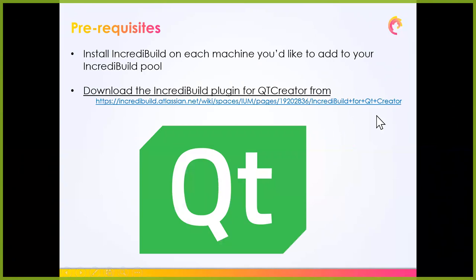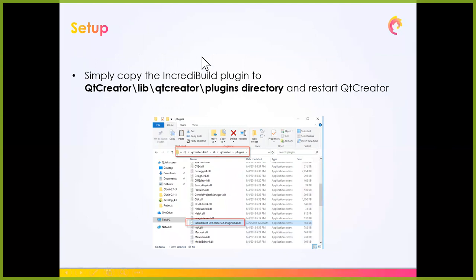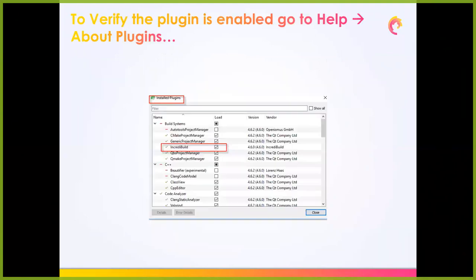We've made the experience of working with IncrediBuild as seamless and easy as possible, including for Qt Creator. First, install IncrediBuild on every machine you'd like to add to your IncrediBuild pool — it's a simple next-next-next installation, with a silent install option available. Then download the IncrediBuild plugin for Qt Creator from our resource manager, copy it to the Qt Creator plugins directory, and restart Qt Creator. That's it — you're ready to go.